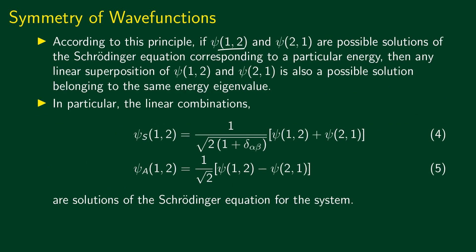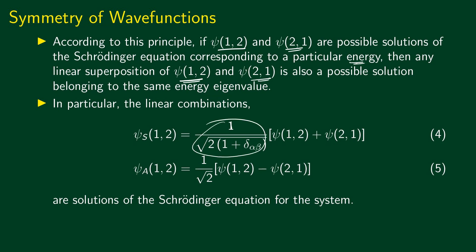If ψ(1,2) and ψ(2,1) are possible solutions of the Schrödinger equation corresponding to a particular energy, then any linear superposition of ψ(1,2) and ψ(2,1) is also a possible solution belonging to the same energy eigenvalue. In particular, we construct two linear combinations. The first one is ψ_S(1,2) = [1/√(2(1+δ_{αβ}))] [ψ(1,2) + ψ(2,1)], where δ_{αβ} = 1 if α = β, and 0 if α ≠ β.